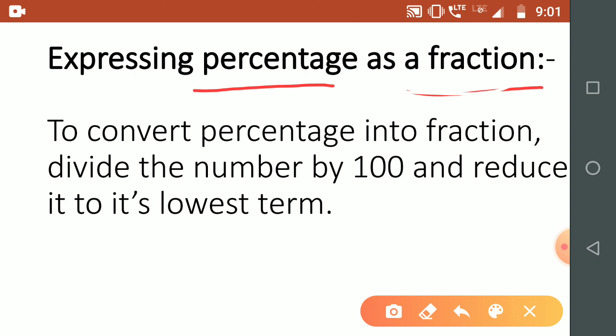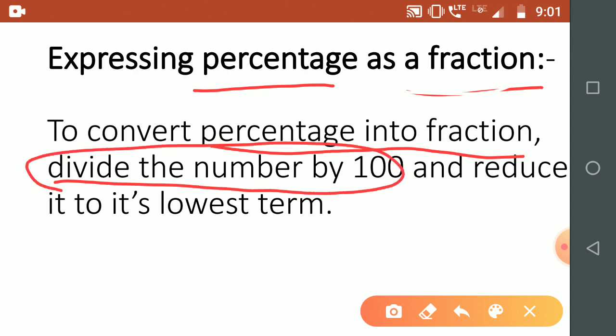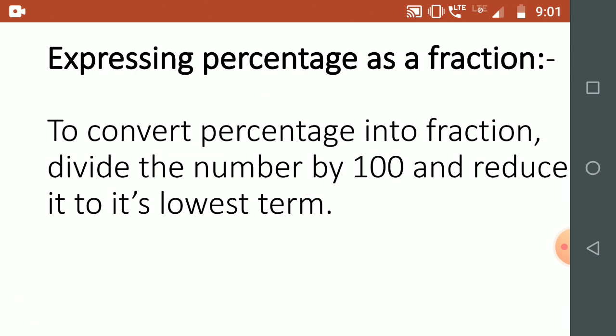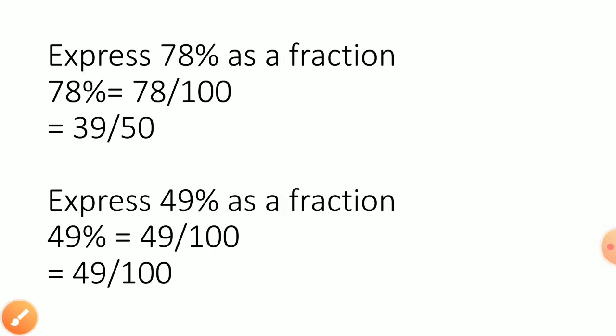To convert the percent into fraction, divide the number by 100. When the number is given in percentage form, like 68%, and you have to convert it into fraction, then divide that number by 100 and reduce it to the lowest term. In mathematics, whenever you get the final answer, you have to reduce it to the lowest possible terms, meaning cancelling by the common factor and bringing it to the lowest term.